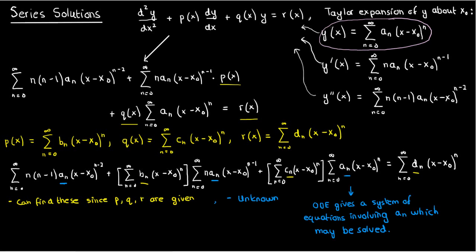But there's a caveat. We can only do this if we properly expand p(x), q(x), and r(x) about x equals x₀. If we can't — if one of the functions is undefined at x₀ — then we won't be able to properly expand and simplify, and our series solution method wouldn't work. To combat this, we'd have to express y(x) as a power series about some other value of x where p, q, and r are defined. Another option is to use the Frobenius method in certain situations, which we'll talk about in a future video.